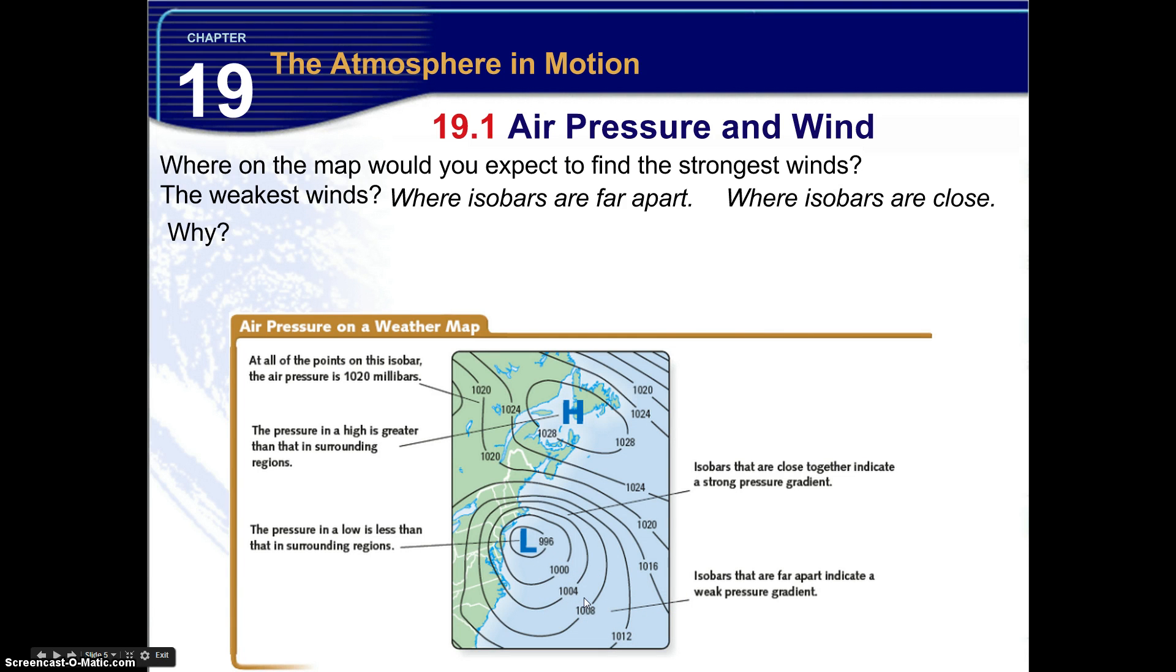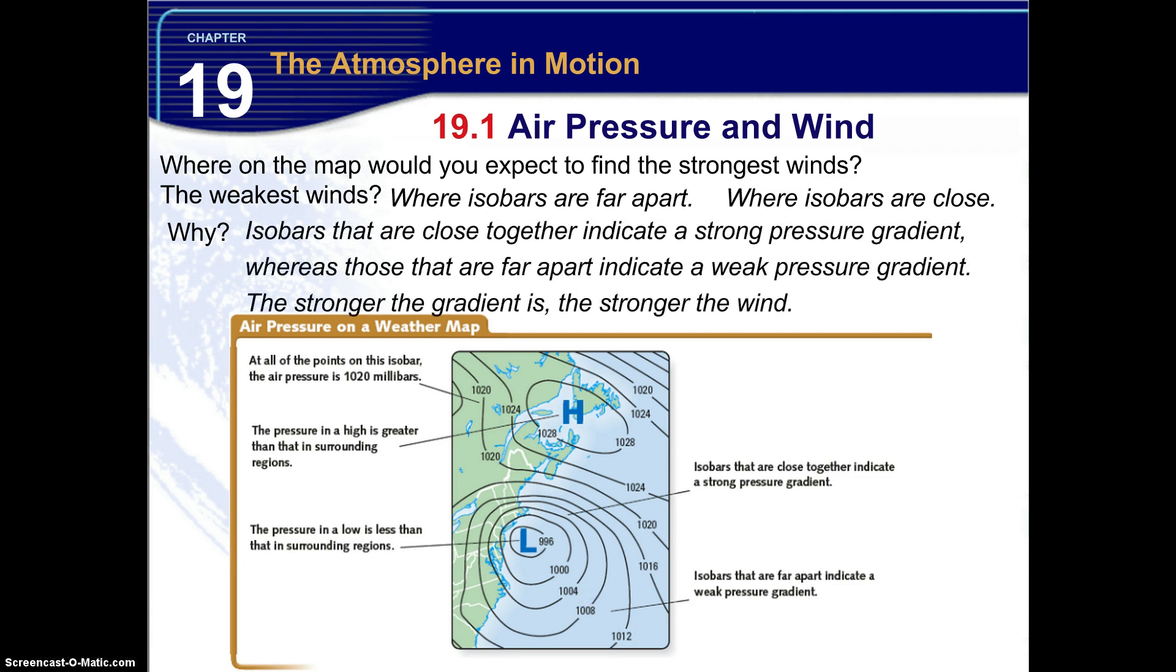Now why is that? Isobars that are close together indicate a strong pressure gradient, whereas those that are far apart indicate a weak pressure gradient. The stronger the gradient, the stronger the wind. Closer they are together, the stronger the wind, the stronger the gradient.